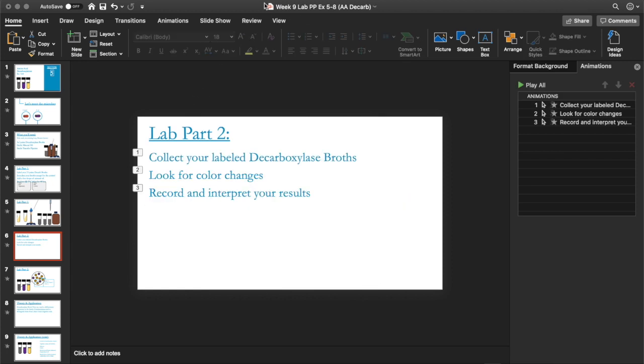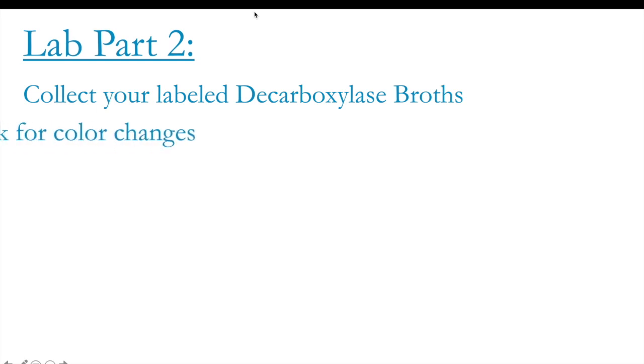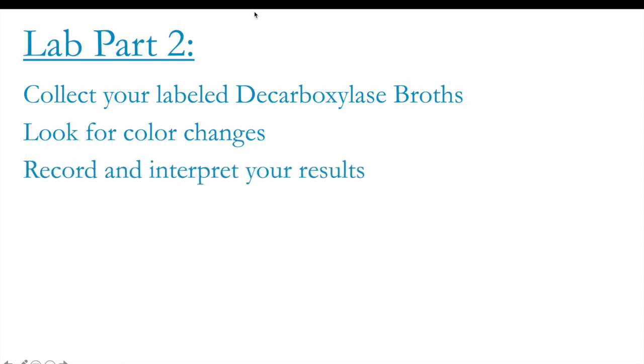Let's move on to part two. Now, in part two of the lab, you'll be coming back, of course, and collecting the decarboxylase broths that you've labeled. What you want to do is look for color changes. Once you have recorded all of your information, you will then write that down in the table located in the specific exercise in your lab manual, and then interpret your results.